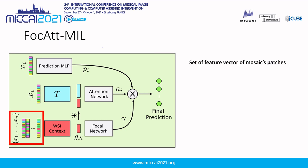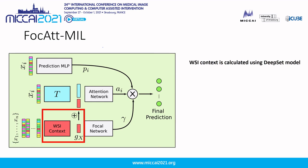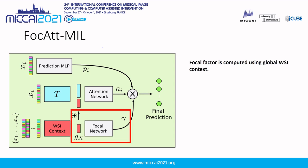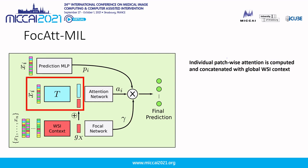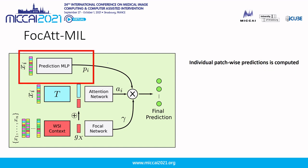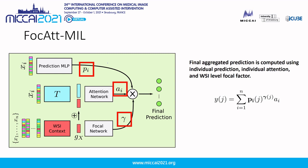Each whole slide image is represented as a set of feature vectors computed using its mosaic patches. A single vector representation of this set, called the WSI context, is then computed using the DeepSet model. The WSI context is then utilized to calculate the focal factor. The attention value for each patch is calculated by passing its feature vector to the transformation network T, concatenating it with the WSI context, and passing it to the attention network. The patch-level prediction is calculated by passing the feature vector to a prediction MLP. The final aggregated prediction for the whole slide image is calculated through the patch-level prediction, patch-level attention, and the whole slide-level focal factor.